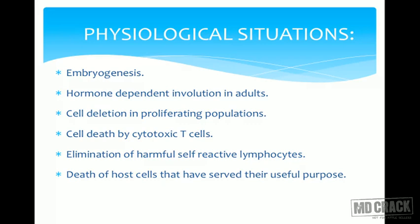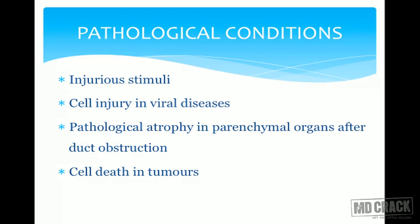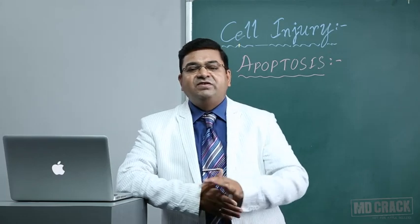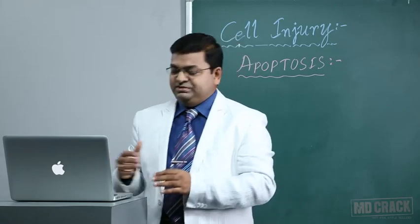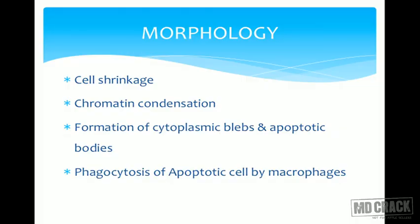Pathological conditions include cell injury in viral diseases like viral hepatitis, where hepatocytes infected by viral particles are removed by apoptosis — classically, apoptotic bodies are seen in liver sections. Pathological atrophy in parenchymal organs after duct obstruction — for example, if the cerebral gland duct is obstructed by stone formation — leads to apoptosis. Cell death also occurs in tumors by apoptosis, and the apoptotic index is a good indicator for predicting tumor prognosis.